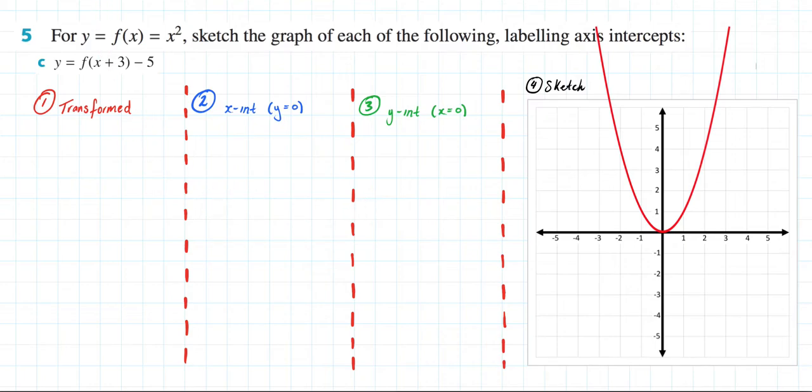We are doing exercise 7a and in this video I'll be answering question 5c which says for y equals f of x equals x squared, sketch the graph of each of the following, labeling axis intercepts. And here we've been given y equals f of x plus 3 minus 5.